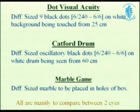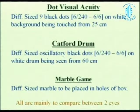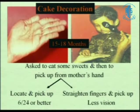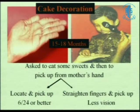Central steady maintained with cross fixation and freely alternating could be between 6/60 to under 6/12 or 6/9. There is dot visual acuity: 9 black dots on a white background, touched from a distance of 25 centimeters. There is a catfoot drum with different size oscillating black dots on a white drum seen at a distance of 60 meters. There is a marble game with different size marbles. Also, there is a cake decoration test that can be done between 15 to 18 months — you put one in the kid's mouth since it is sweet, and the kid wants to get another one. The important thing is whether he locates and picks it up from your palm, which tells you whether he is able to see it.